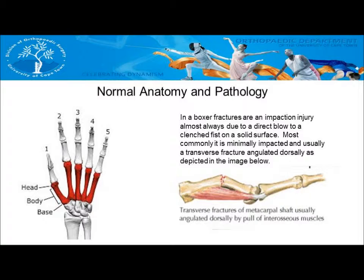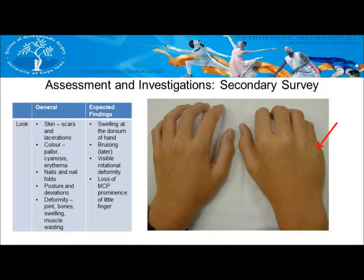Most commonly it is minimally impacted and there is usually a transverse fracture angulated dorsally, as depicted in the image on the left. While looking at the hand, we would expect to see swelling at the dorsum of the hand, bruising which usually occurs later, a visible rotational deformity, and loss of the metacarpophalangeal prominence of the little finger.